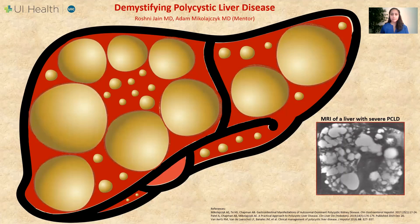To understand this disease, we must first understand what a cyst is. A cyst is a closed sac-like structure that can be located anywhere in the body and is filled with any fluid or substance.